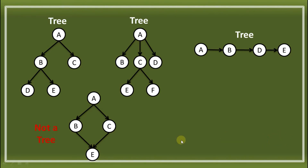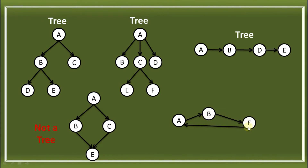Next, we have example number five. If you're going to look, A has a child node which is B, and B has a child node which is E. So, is it possible that E's child is A? This is not a TREE, because a child node is not allowed to point back to its ancestor.